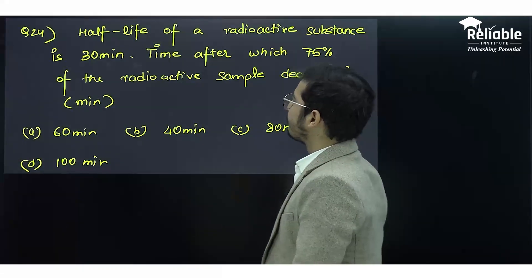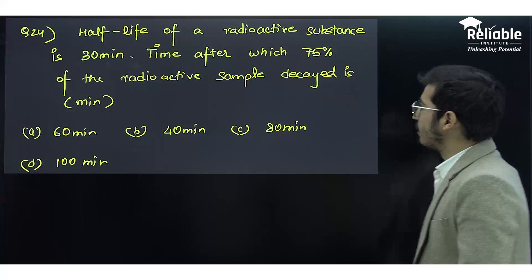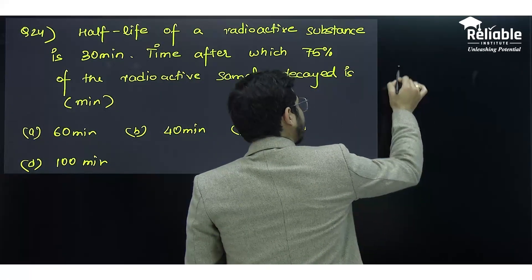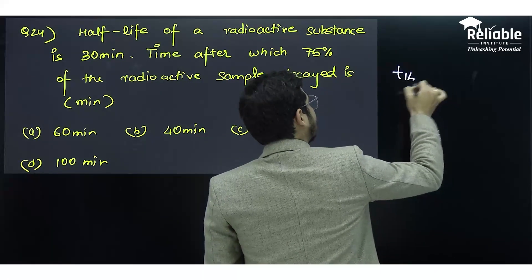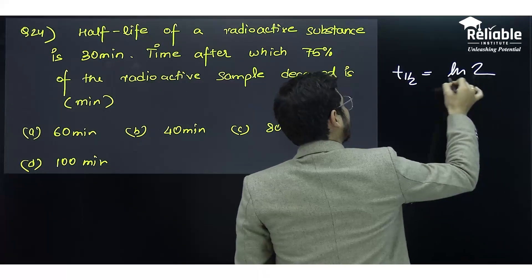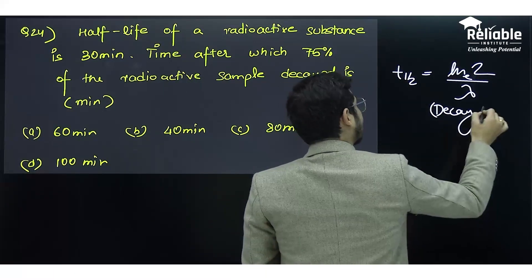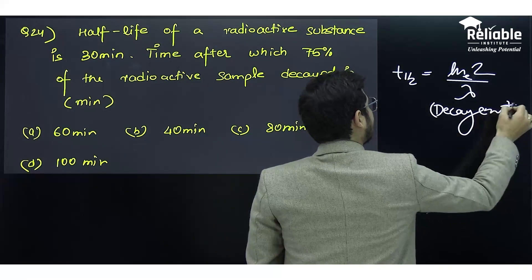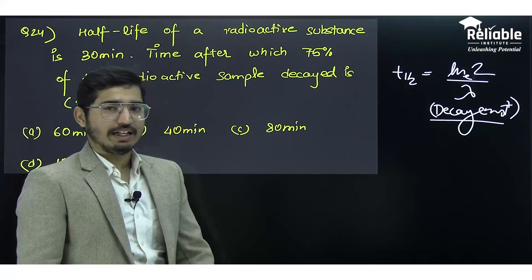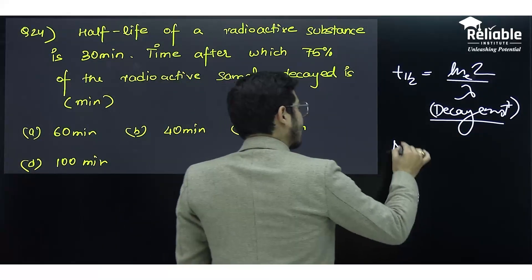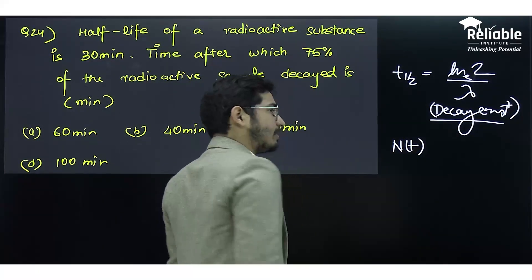Next question: half-life of a radioactive substance is 30 minutes. First, you must remember the half-life expression: t_1/2 = ln(2)/λ, where λ is the decay constant.